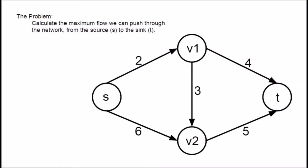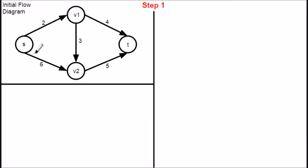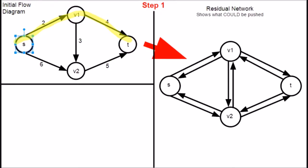We have a problem. How do we find the maximum flow within the network from the source to the sink? Let's run through an example. This is our initial flow diagram. Currently there is nothing flowing through the network, therefore we can choose any path at random. This is the residual network of the flow diagram. It shows the flow that could be pushed in either direction at each vertex. In the path, we have to find the edge with minimum capacity, also known as the critical edge. In our case, it is the edge with capacity 2.